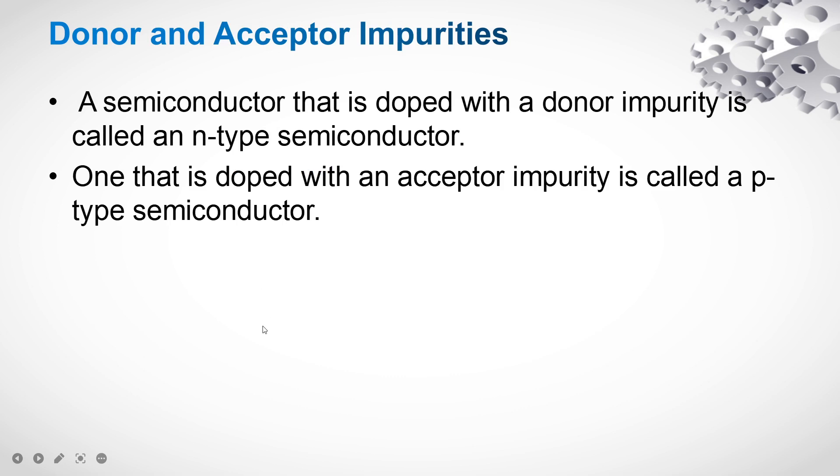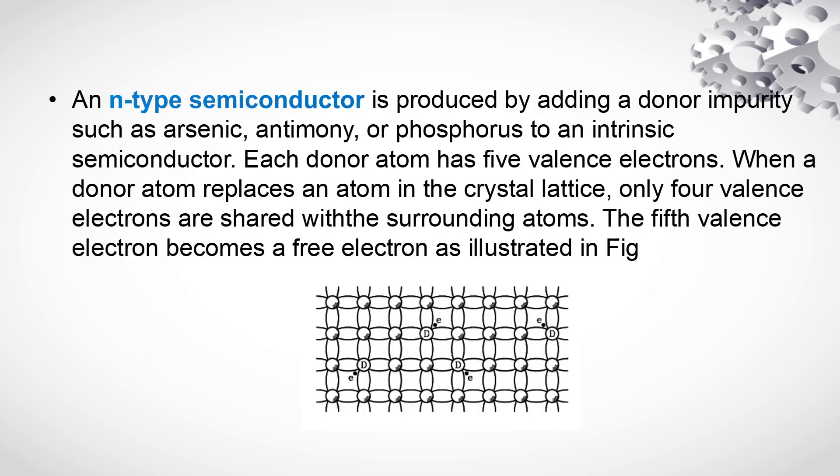Donor and acceptor impurity. A semiconductor when doped with a material which donates the extra electron is called donor impurity. And when it is doped with the impurity which is having a vacancy as a hole, it is known as the acceptor impurity. P types are acceptor and N types are donor.